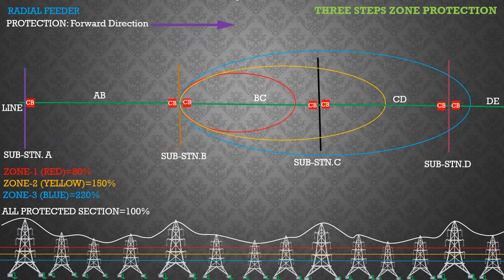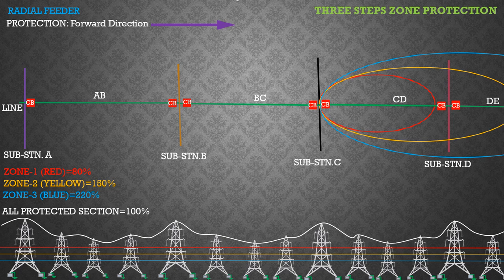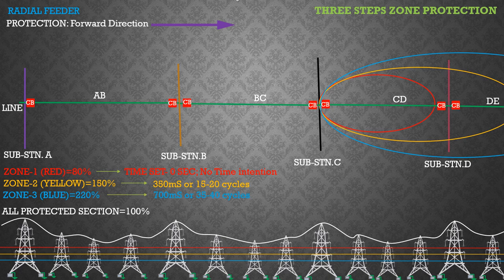Relays at substation B and substation C have the same zone settings for their distance relays — Zone 1, Zone 2, and Zone 3. The time setting for Zone 1 protection is zero seconds, meaning no time delay. The time setting for Zone 2 protection is 350 milliseconds, and the time setting for Zone 3 protection is 700 milliseconds.